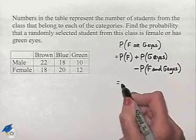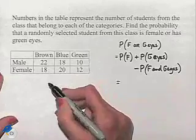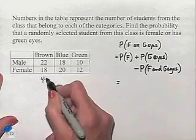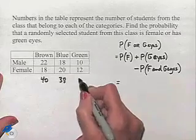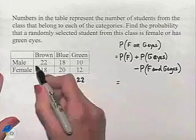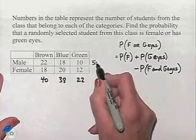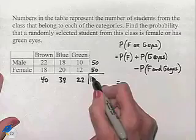We're going to evaluate this by first adding down the column, which is going to give us 40, 38, 22, adding across the row which will give us 50, 50, and then in both cases we have a total of 100.